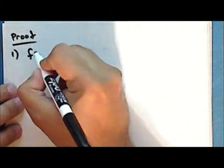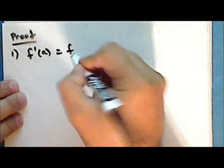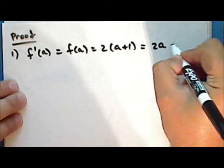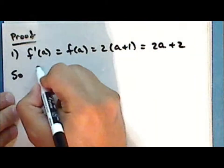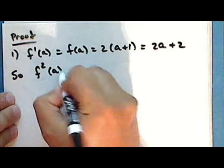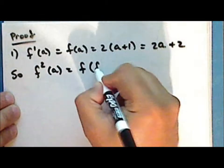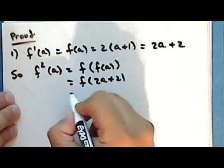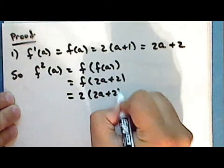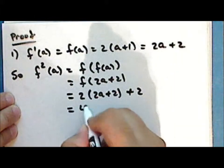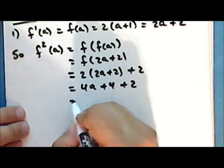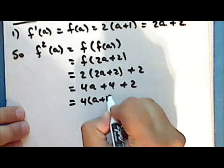Proof. First statement: the first iteration of f is simply f(a) = 2(a + 1), which we can rewrite as 2a + 2. The second iteration is f(f(a)) = f(2a + 2) = 2(2a + 2) + 2 = 4a + 4 + 2, which we can rewrite as 4 times the quantity (a + 1) plus 2.